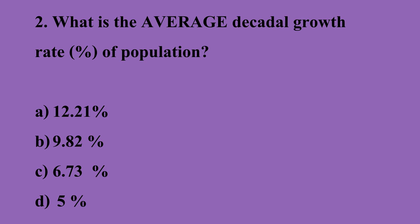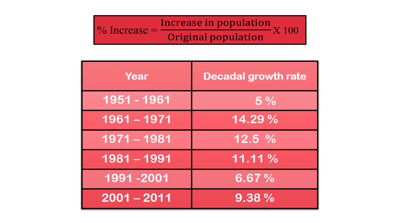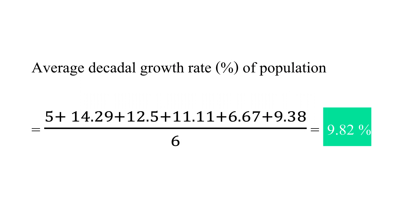The second question is: what is the average decadal growth rate percentage of population? We already calculated the growth rate for four decades, so we just need to calculate it for the remaining two: 1951-1961 and 1981-1991. Using the same formula, the percentage increase for 1951-1961 is 5% and for 1981-1991 it is 11.11%. To find the average for all decades, add all six percentage growth rates and divide by 6. Be careful — although there are 7 years given, there are only 6 decades. The answer is 9.82%.